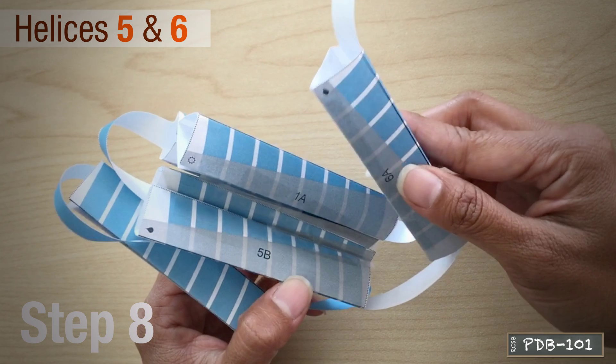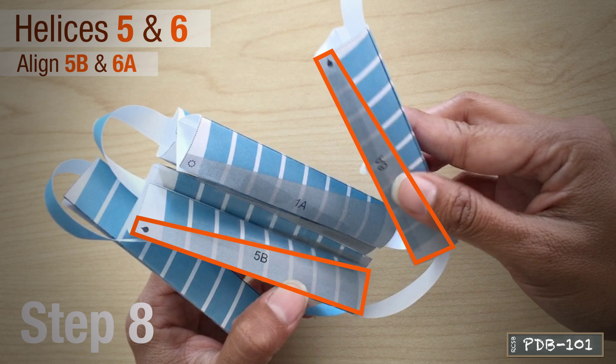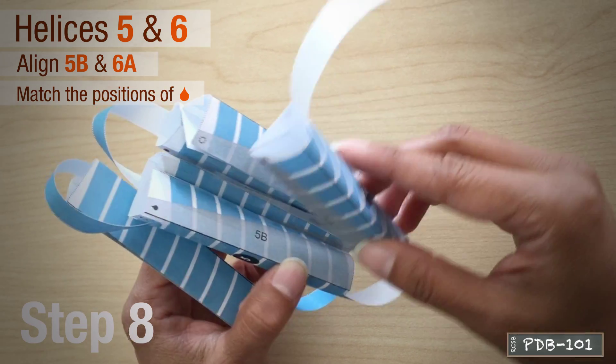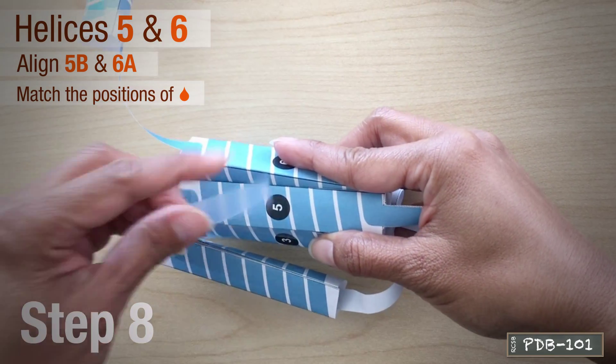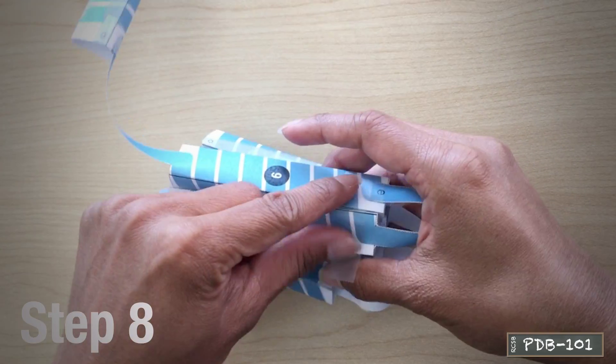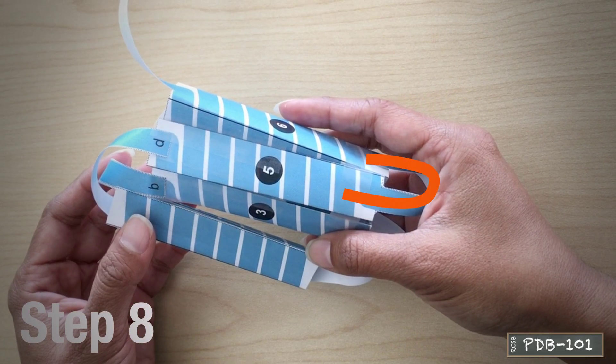Connect helices 5 and 6 by aligning areas 5B and 6A, matching the position of the raindrops. Now you will notice the last intracellular loop forming.